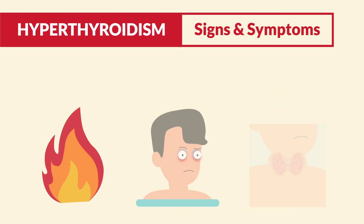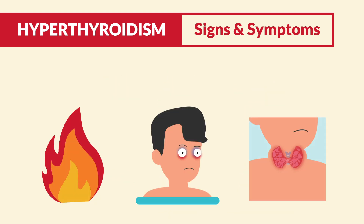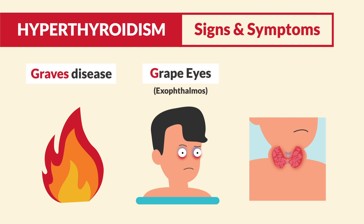To remember a few classic signs that the NCLEX loves to test, think of the G in Graves' disease. G for grape eyes, known as exophthalmos. And the next G is for golf balls in the throat, known as a goiter.